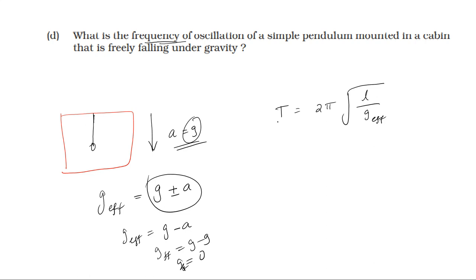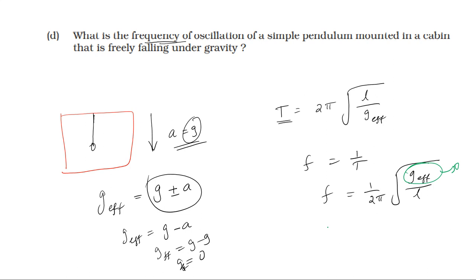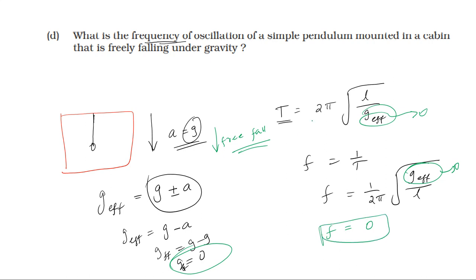Frequency is equal to 1 by time period. Now the effective g is zero. In free fall, the effective acceleration is zero. So the time period becomes infinity, because T equals 2π root of L by g effective, and with g effective equal to zero, T equals 1 by 0 which is infinity. Therefore frequency equals 1 by time period equals 1 by infinity equals zero. So the frequency is zero.